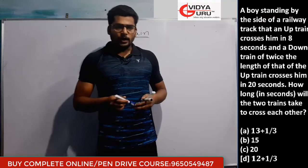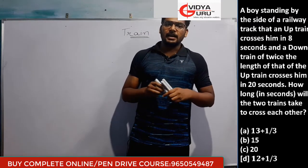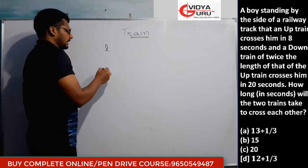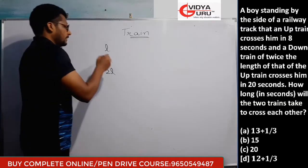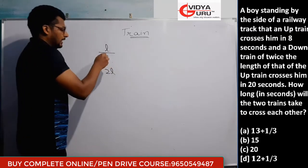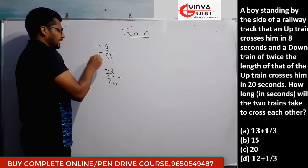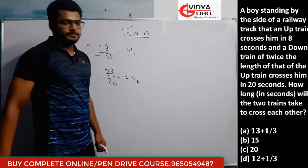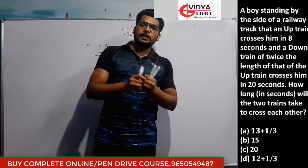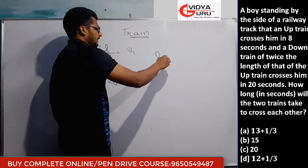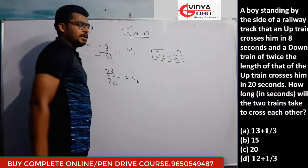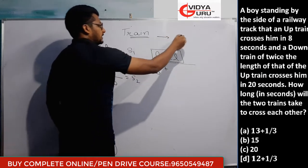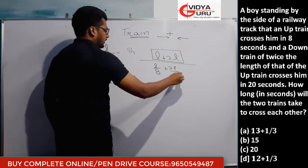Next question: A boy is standing on the side of a railway track. An up-train crosses him in 8 seconds. A down-train whose length is twice that of the first train crosses him in 12 seconds. If the first train's length is L, the down-train's length is 2L. Speed of first train = L/8, speed of second train = 2L/12 = L/6. Question asks: how long will the two trains take to cross each other?